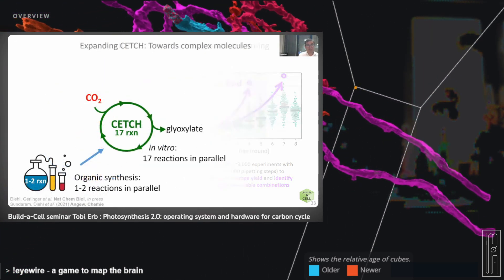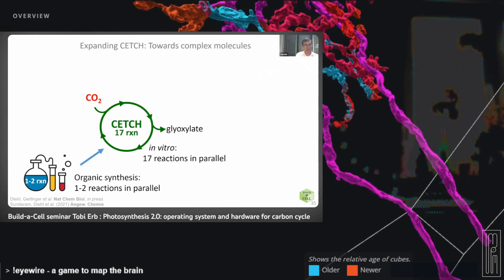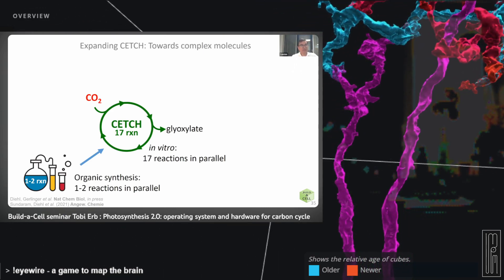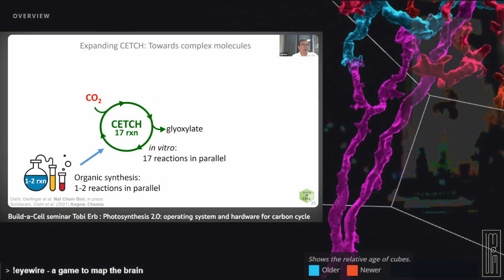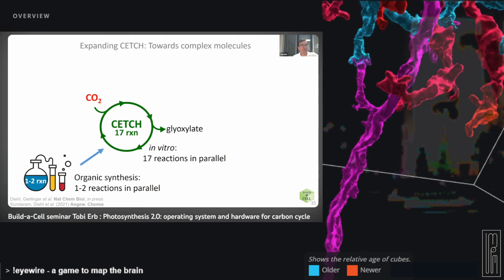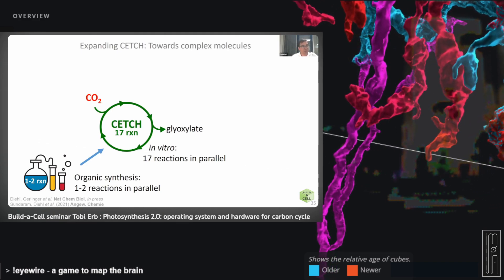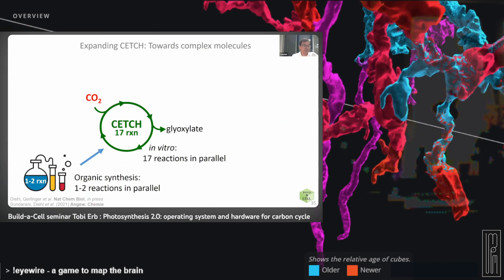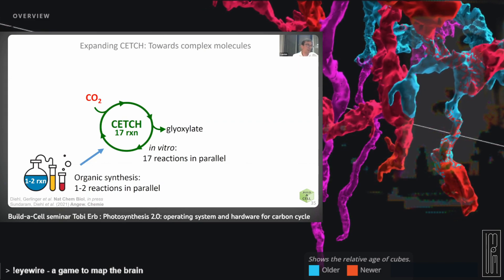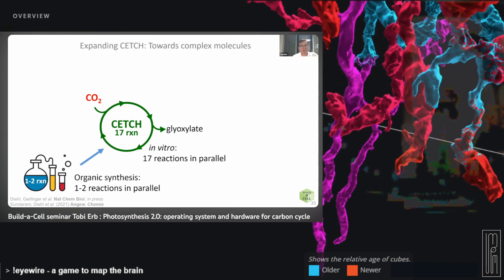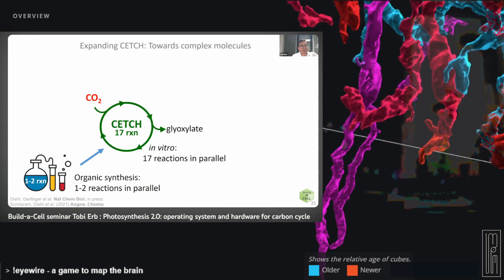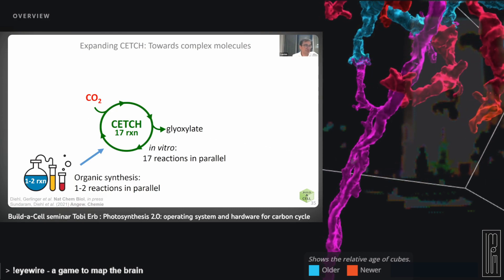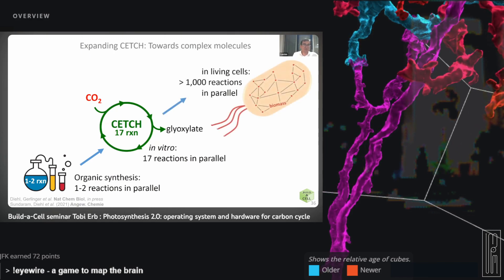Where do we stand now? If I compare the CETCH cycle to what chemistry can do: we fix CO2 in 17 different reactions into a small C2 compound called glyoxalate. This is much more than chemistry has achieved, where you can typically operate one to three reactions in parallel before having to change buffer or catalytic conditions. With these more complex catalytic cascades, we've already achieved a factor of 10 improvement compared to classical chemistry, but we're still far from what biology does — a cell runs a thousand reactions in parallel.